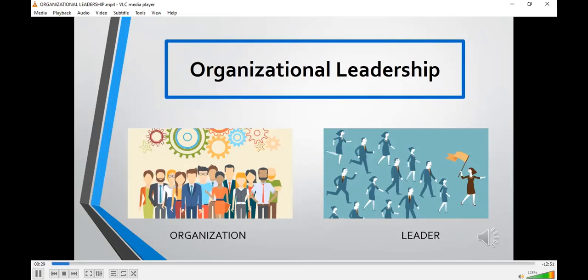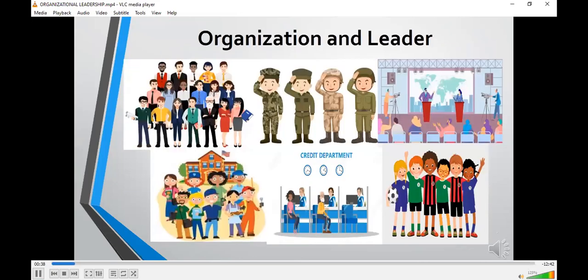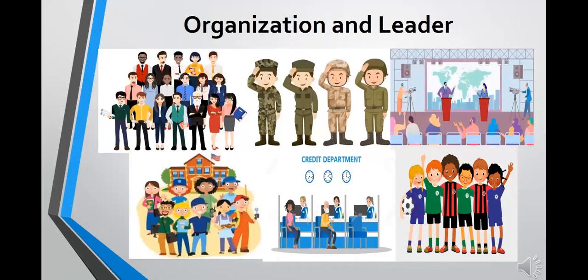An organization is a group of people organized for some end or work, meaning those who are part of the organization have common goals. For example, a company's main goal is to maximize profits; the military's goal is to preserve peace and security and provide for the defense of the country; a political party aims to promote specific ideological or policy goals; a school department's goal is to improve society through high quality specialized education; and a team's goal is to improve players' skills to win the game.